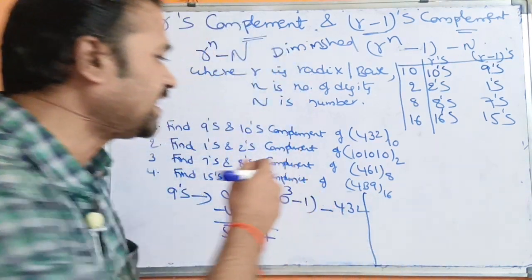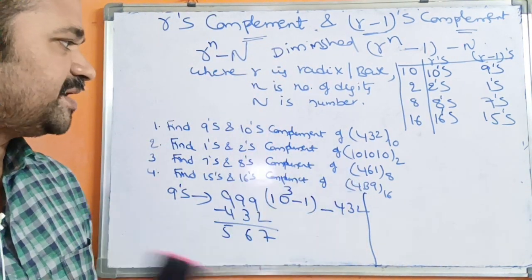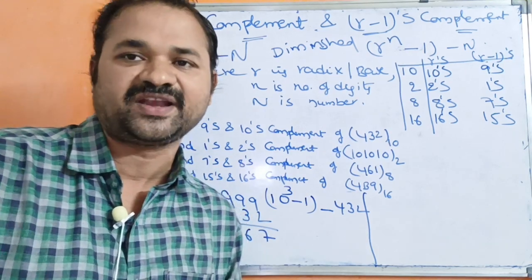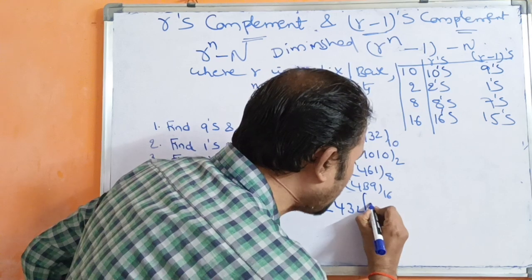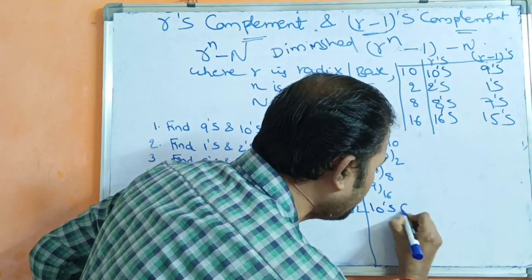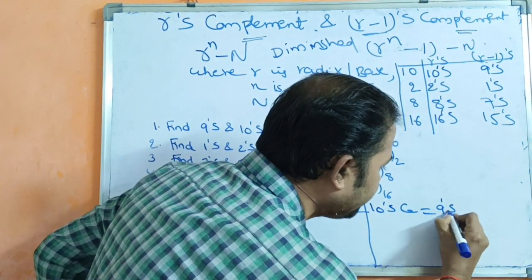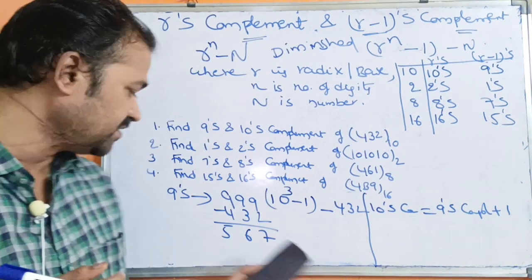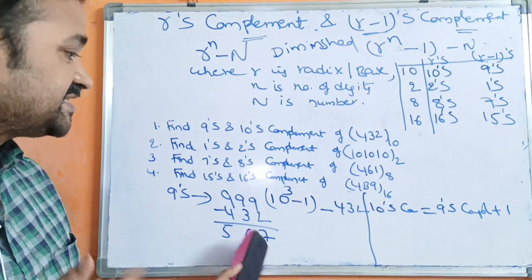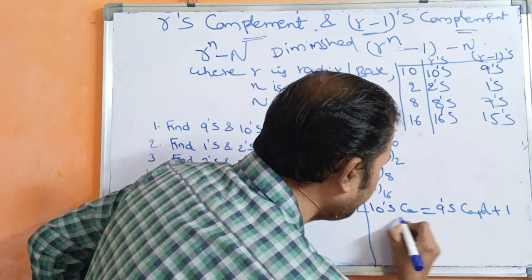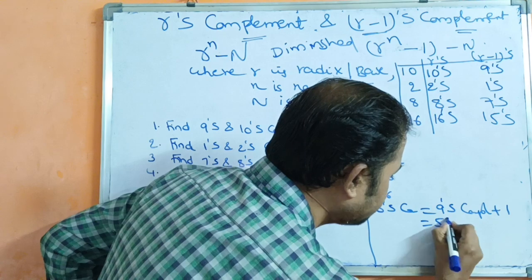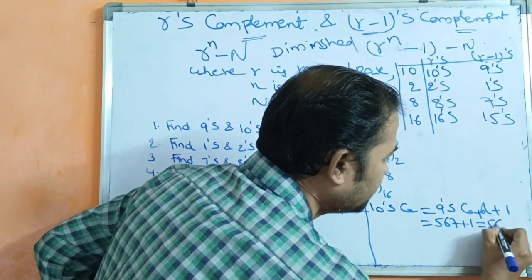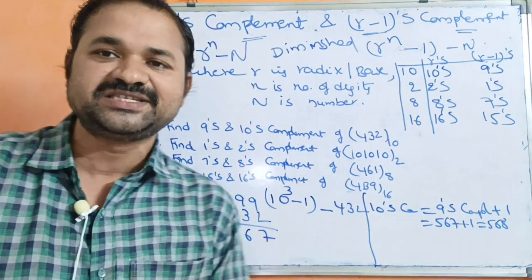Now for 10's complement: the formula is 9's complement plus 1. We already calculated the 9's complement as 567, so 567 plus 1 gives 568. That is the 10's complement of 432.